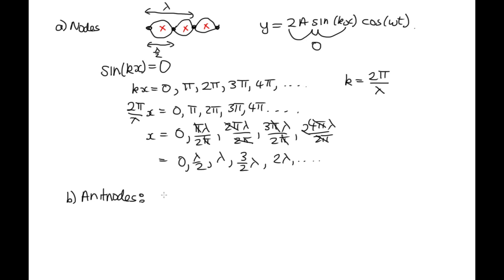So the first way to do it is to realize that the antinodes are halfway between the nodes. And then we can just divide our answer for x here by 2. So halfway between 0 and λ over 2 is λ over 4. Halfway between λ over 2 and λ is 3λ over 4. So that's one way to do it.